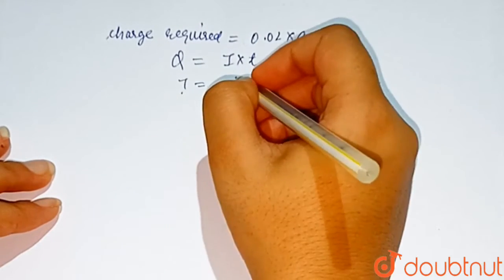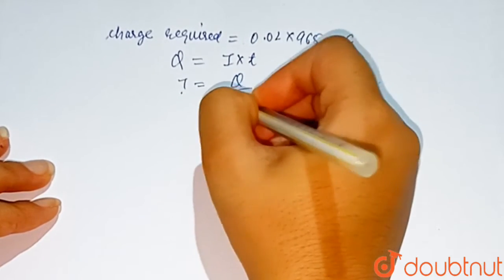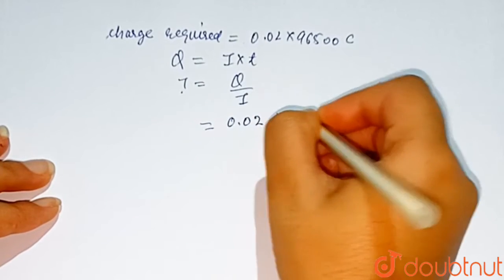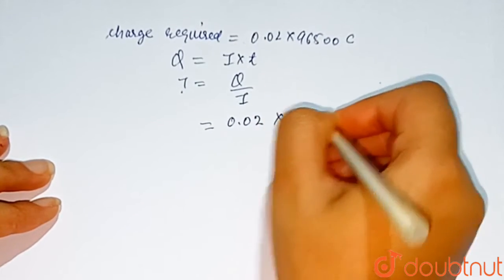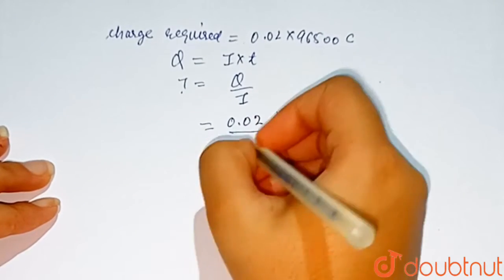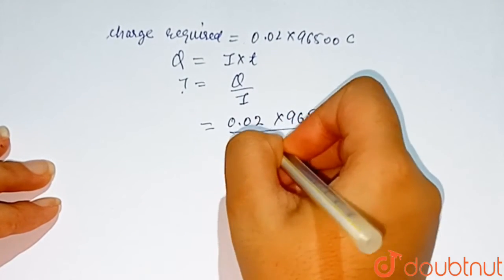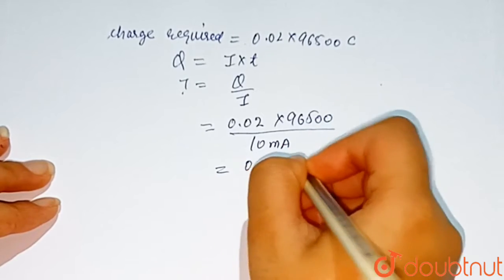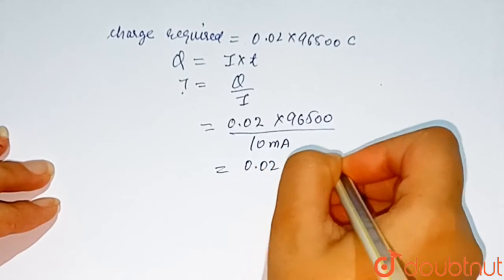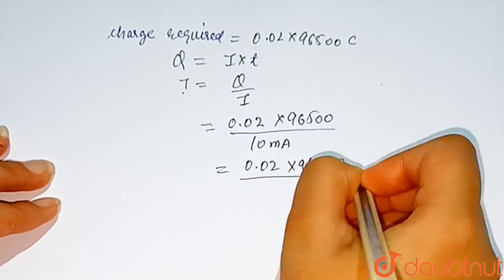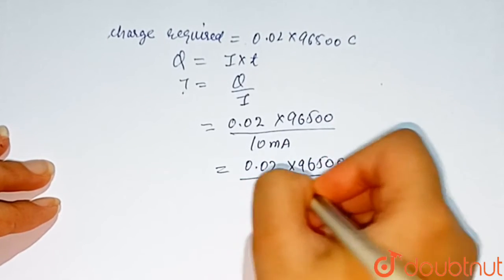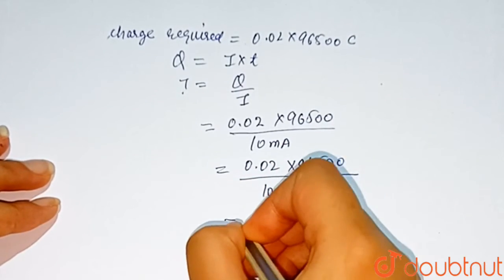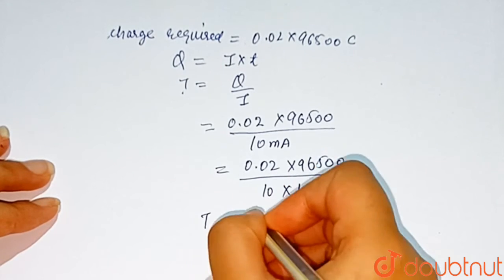So time required: t equals Q upon I, which is equal to 0.02 into 96500 divided by current 10 milliampere, converted into ampere: 10 into 10 raised to power minus 3.